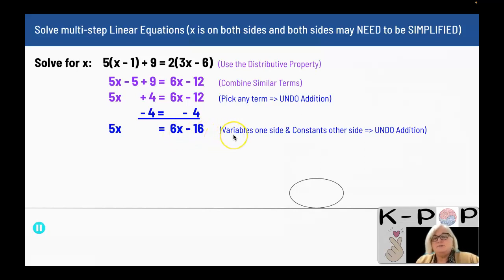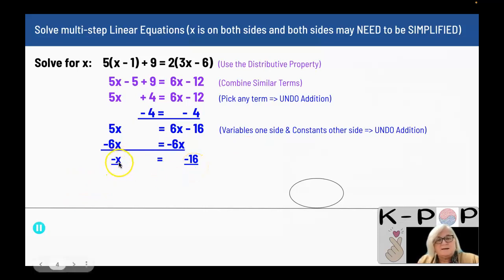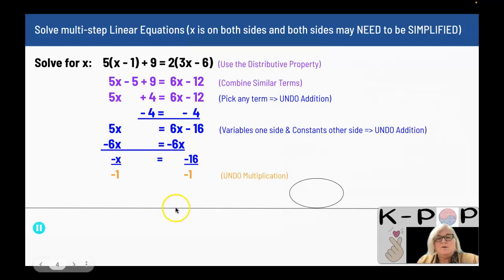Now I want to move my variables to one side and my constants to the other side, so I am going to subtract 6x from both sides. I end up with negative x equals negative 16. I want x, not negative x. This is negative 1 times x, so I am going to undo the multiplication by dividing both sides by negative 1. When I do that, I get x equals 16. My final answer is x equals 16.